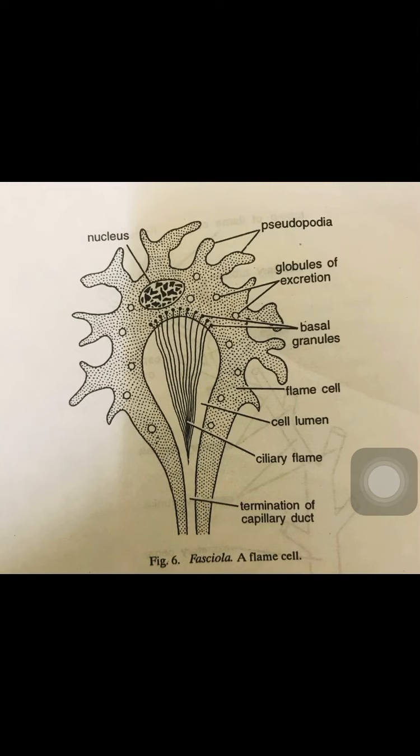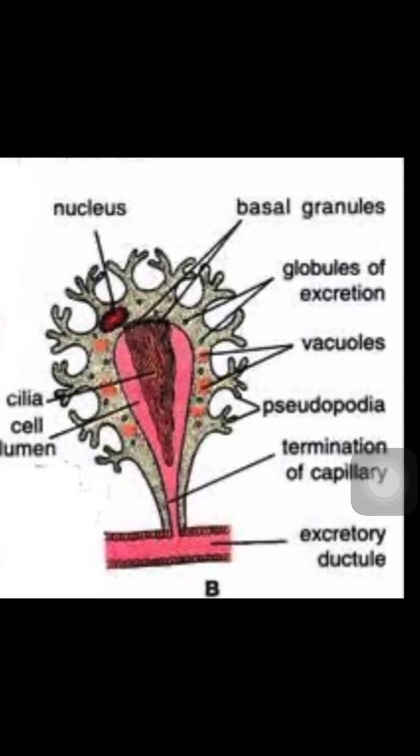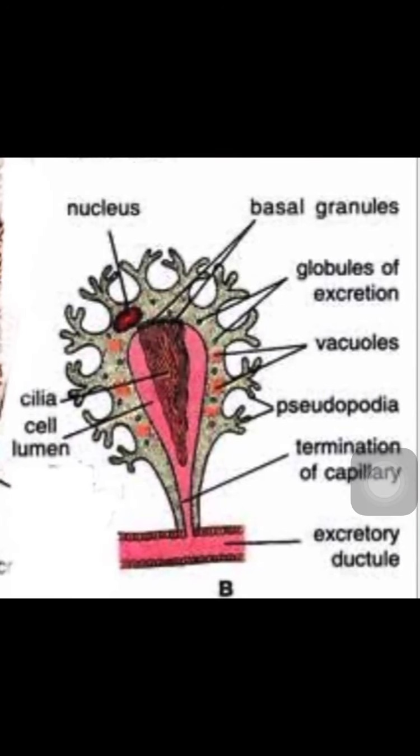We will now study the structure of a flame cell. The flame cell is characteristic of the flatworm. The excretory organ of flatworms is called the flame cell, and there are large numbers of these flame cells present.